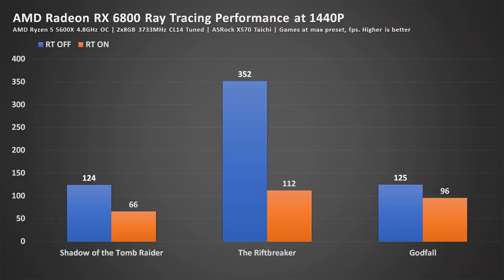In all three titles I set ray traced settings to maximum, and the performance impact is significant. Shadow of the Tomb Raider took a 47% performance hit. The Rift Breaker took a whopping 68% performance hit, going from 352 average down to 112. Godfall, on the other hand, took a 25% performance hit.